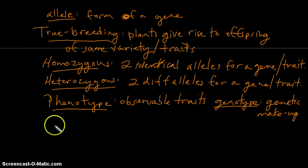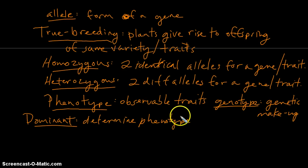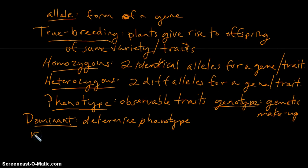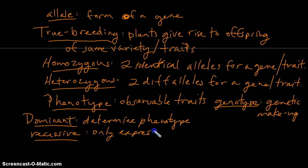Last couple terms here and then we're finished. In regard to alleles, certain alleles will be dominant. Dominant alleles determine phenotype, so if a dominant allele is present then the dominant allele will be expressed, again determining phenotype. Recessive alleles have no direct determination of phenotype. They are only expressed or exhibited or seen in phenotype when the dominant allele is absent.